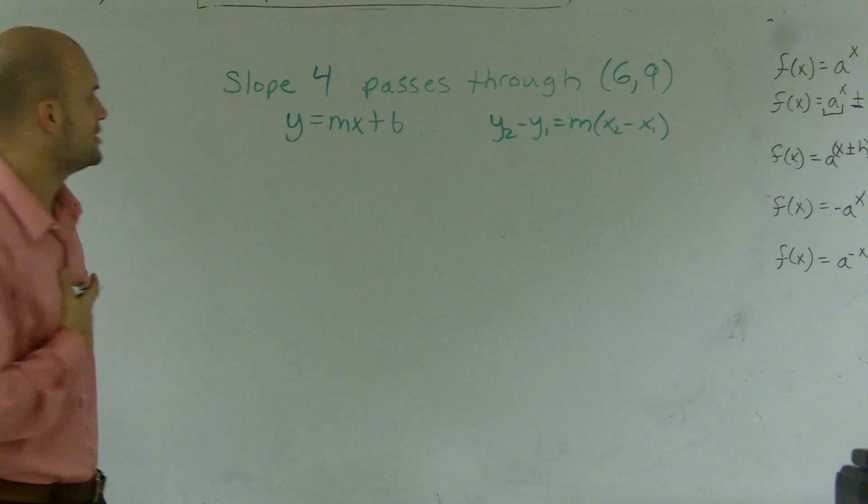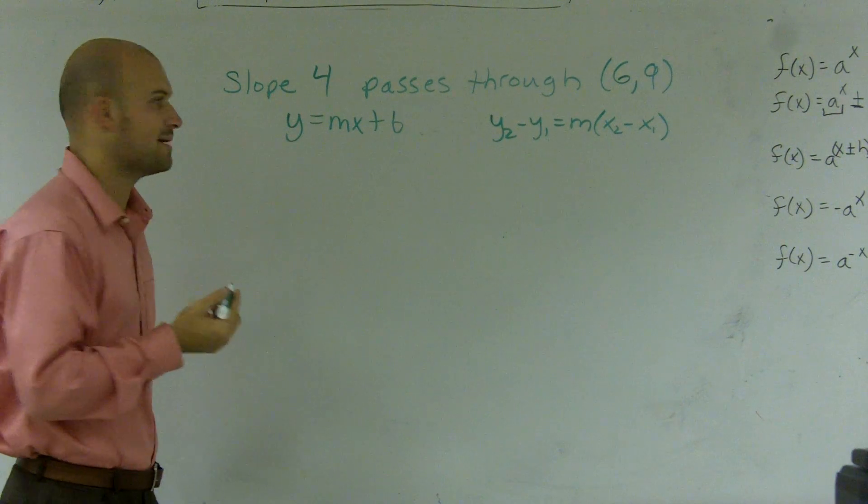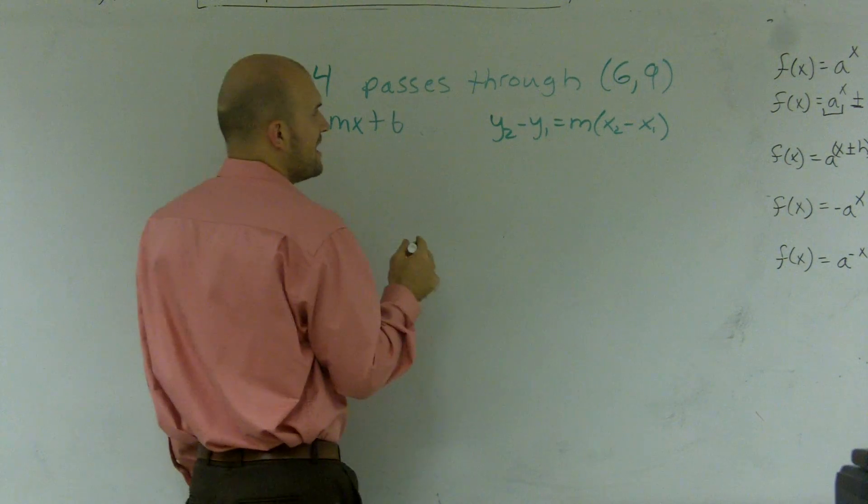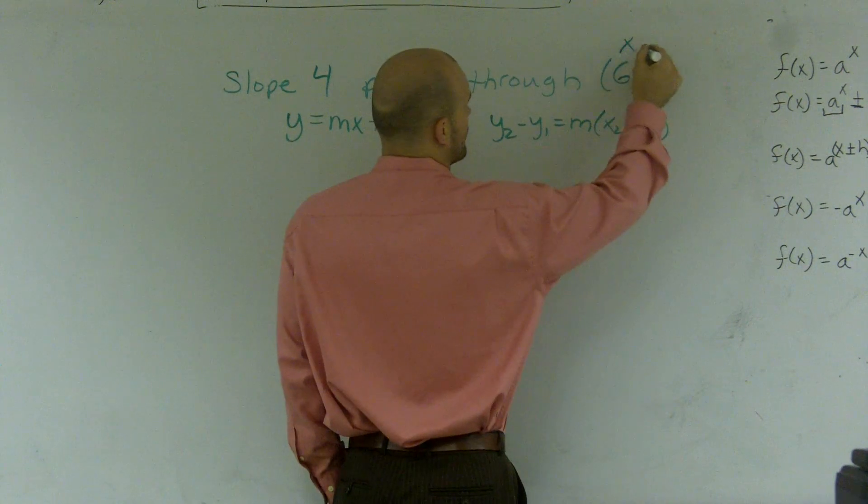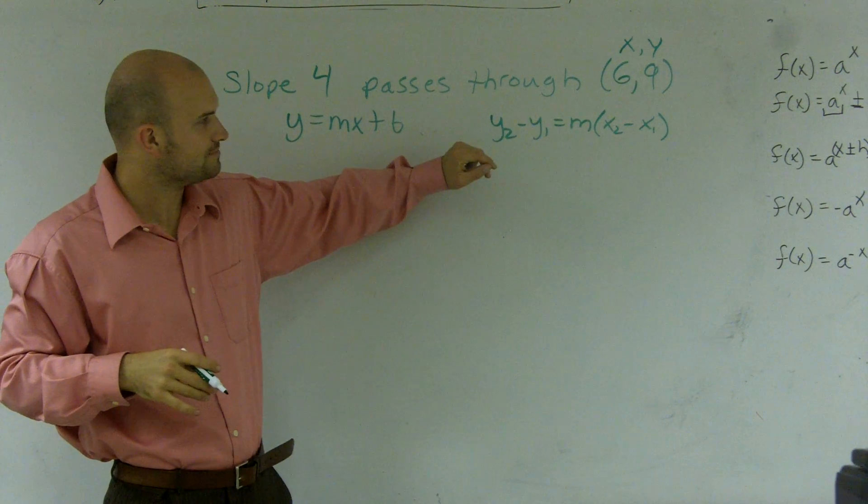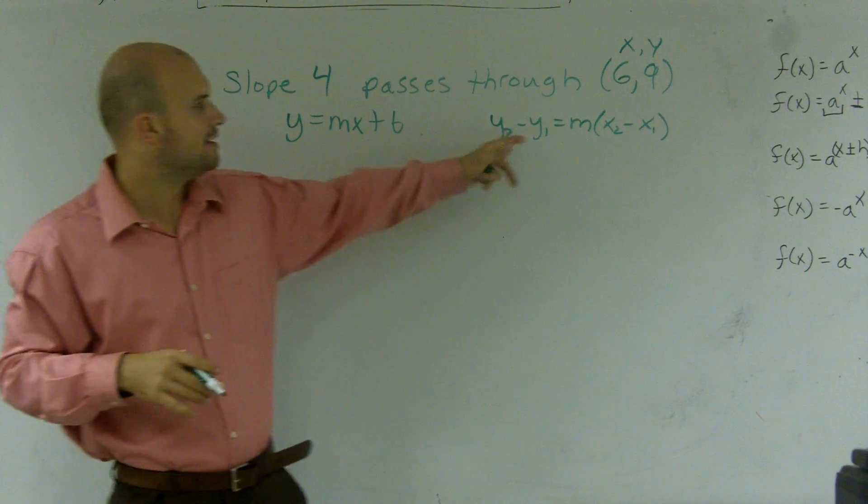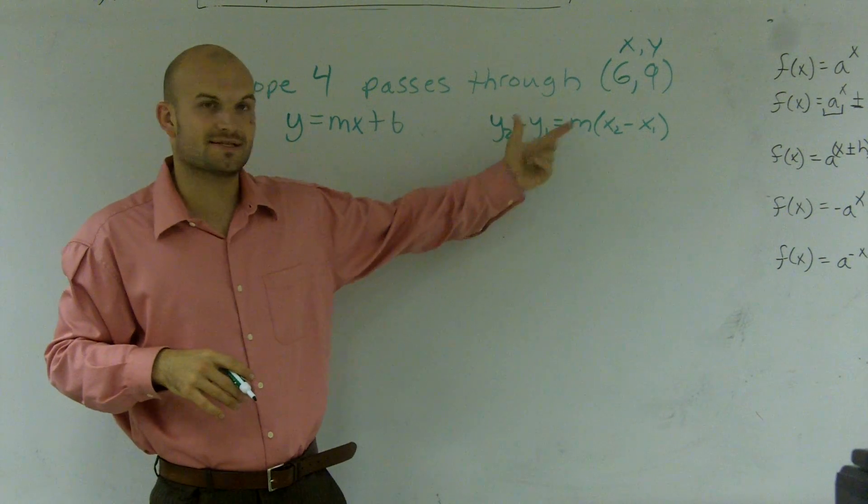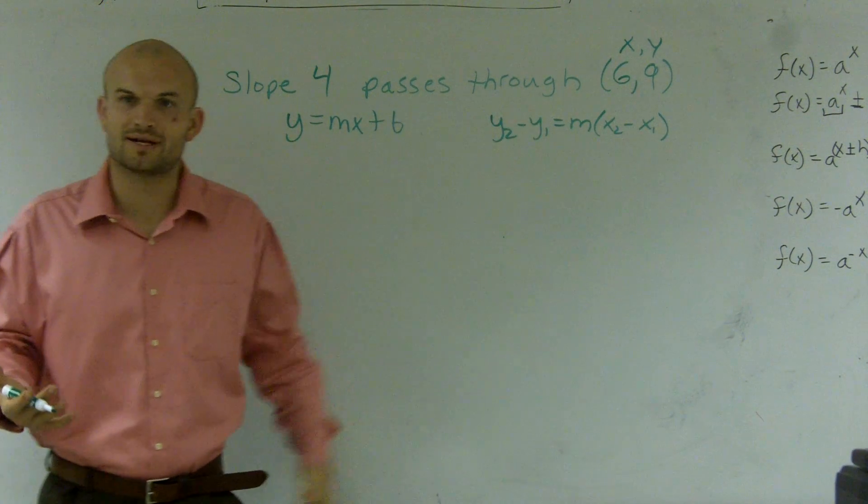So in this format, what I'm going to do is I know that slope is 4, so that's going to equal my m. And then what I also have is I have an x and a y-coordinate. Now on this problem, you can see it's a little more difficult because what we have is we have two x's and we have two y's. So which one am I going to plug it into?